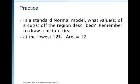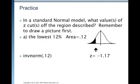In a standard normal model, what values does Z cut or cuts off the region described? Remember to draw a picture first. For the first one, we want the lowest 12%. So, the area would be 0.12. So, that's in the left tail. All the way to the mean there, that's also the median, that's 50%. That's an area of 0.5. So, 0.12 is a little over a fifth of the way there.